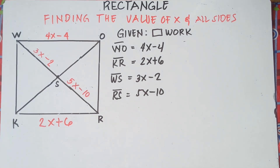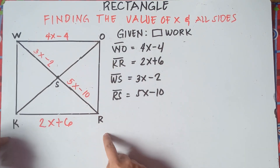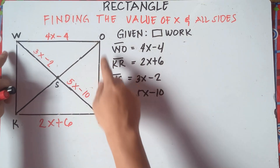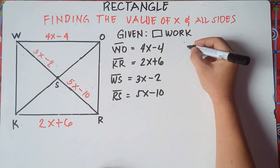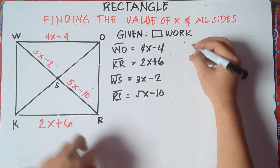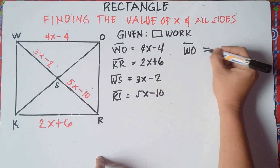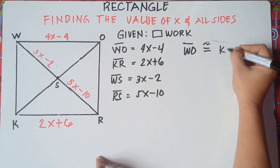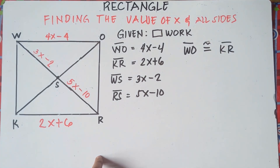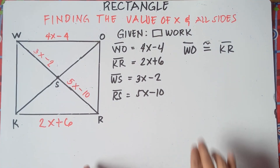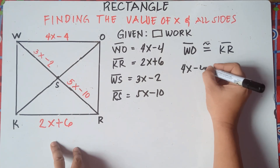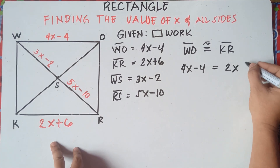One of the properties of a rectangle is that opposite sides are congruent. So WO and KR are congruent. Finding the value of WO, we can say that line WO is congruent to line KR according to the properties of a rectangle. So we can equate them.